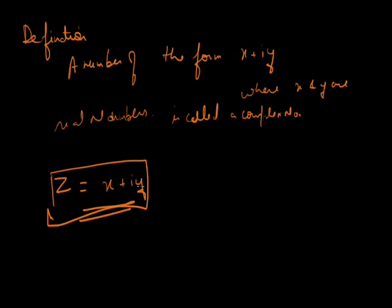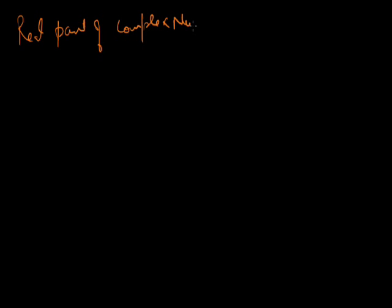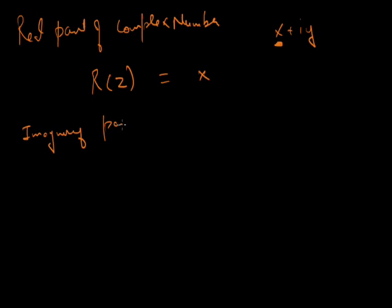The complex number is denoted by z equal to x plus iota y, where x and y are real numbers. Here x is the real part and iota y is the imaginary part. The value of iota is the square root of minus 1. Now, the real part of complex number z is x, and if you ask for the imaginary part of complex number z, it is y.